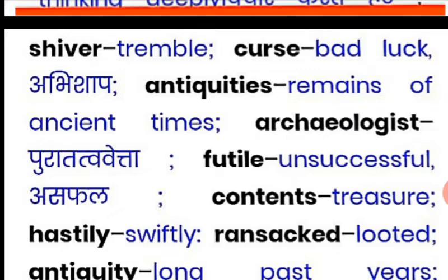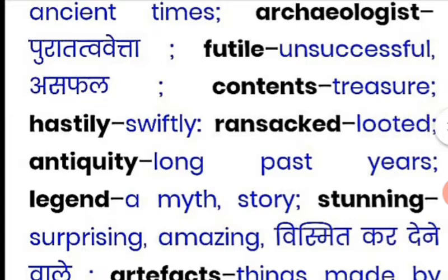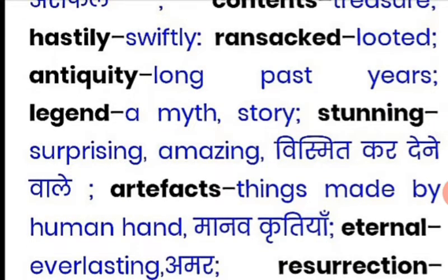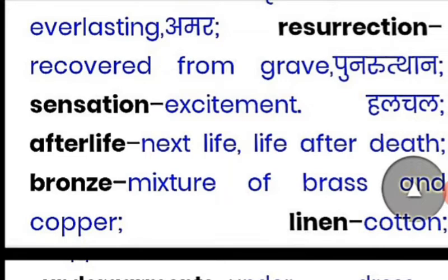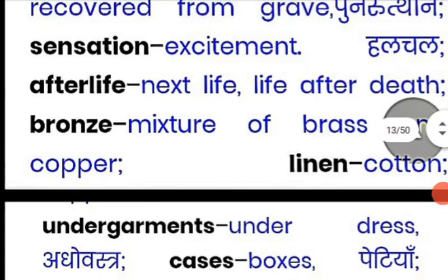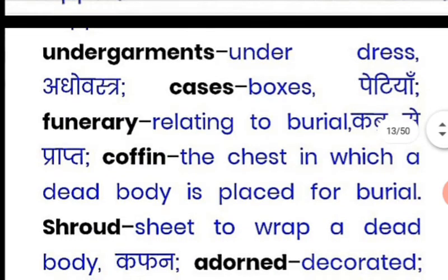'Archaeologist' is the person who discovers old and ancient things. 'Futile' means unsuccessful. 'Contents' means treasure or inventory. 'Swiftly' means very fast. 'Ransacked' means looted. 'Antiquity' means long past years — things belonging to ancient times. 'Legend' is a story or a myth. 'Stunning' means surprising. 'Artifacts' are things made by human hands. 'Eternal' means everlasting. 'Resurrection' means recovered from the grave. 'Sensation' means excitement. 'Afterlife' means the next life after death.